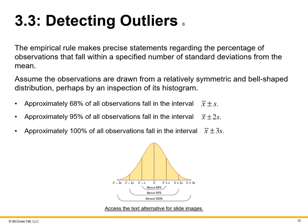Another key concept for detecting outliers is the empirical rule, which makes precise statements about the percentage of observations that fall within a specified number of standard deviations from the mean. Assuming a relatively symmetric, bell-shaped distribution: approximately 68% of observations fall within x̄ ± s, approximately 95% fall within x̄ ± 2s, and approximately 100% fall within x̄ ± 3s. If outliers exist, they can skew data toward a narrower or wider spectrum than expected.